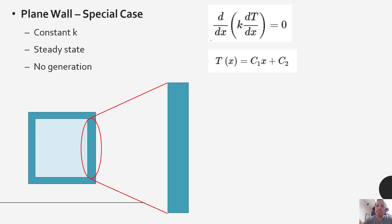So because the second derivative of temperature with respect to x is zero, that means the first derivative is constant. So that means the slope of our temperature profile is constant, meaning it's just a straight line.